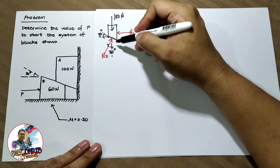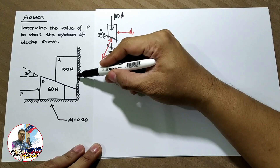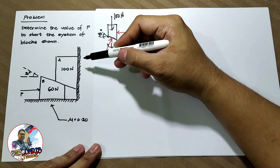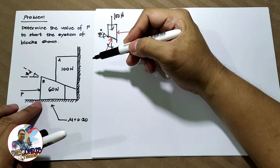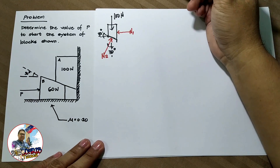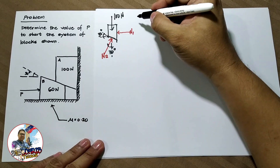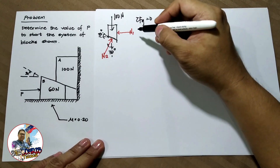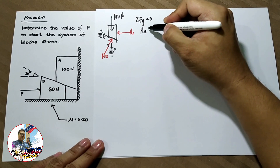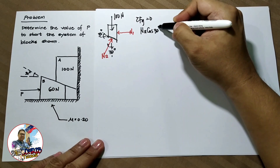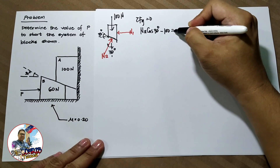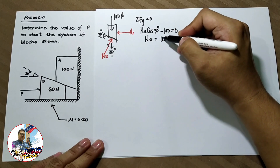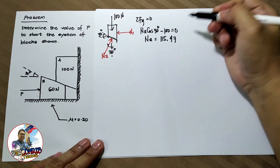We don't have frictional forces here because these surfaces have no friction — only between block B and the floor. If we take summation of forces along the y-axis equals to 0, we have N2 cosine 30 degrees minus 100 equals to 0. So N2 is equal to 115.47 N.